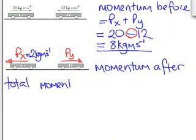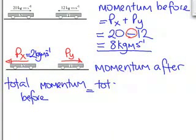So what we have to do now is apply the principle of conservation of momentum. And that tells us that in the absence of any external force the total momentum before a collision is equal to the total momentum after a collision.